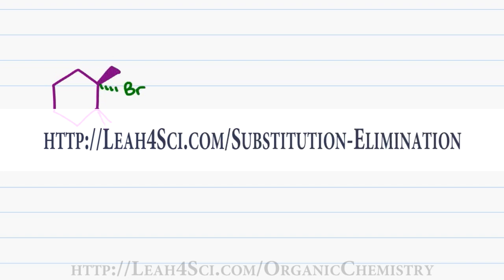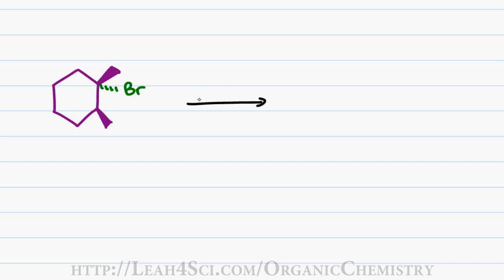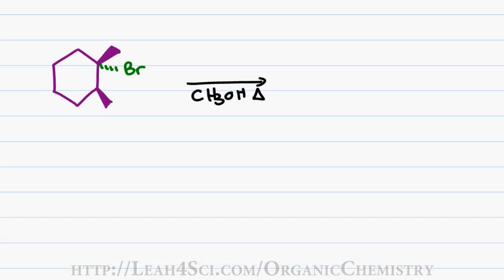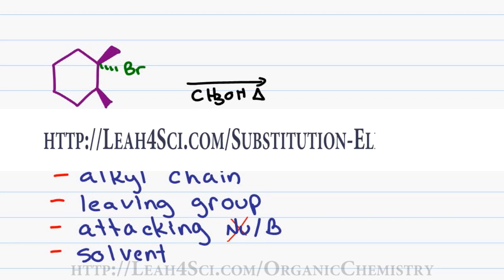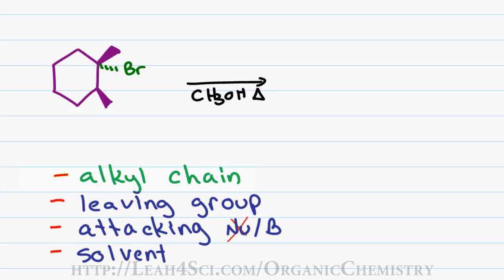We'll use 1-bromo-1,2-dimethyl-cyclohexane reacting in methanol and heat as our Zaitsev rule example. We'll analyze this reaction using my 4-part checklist to determine that an E1 reaction can take place. You can find detailed videos explaining what to look for for each of these concepts on my website. We'll start with the alkyl chain and first identify the alpha carbon holding the leaving group.